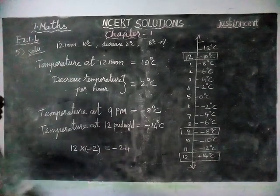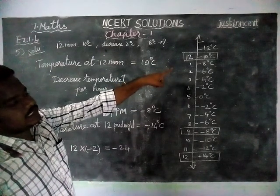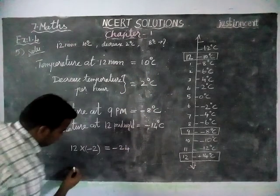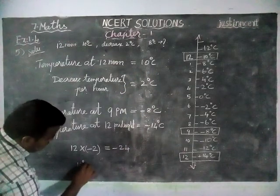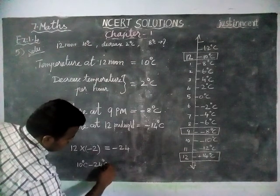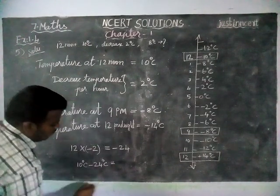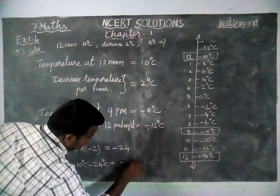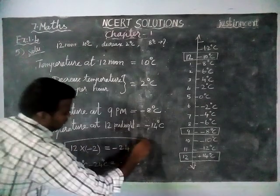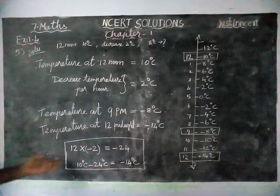Already at 12 o'clock the temperature is 10 degree Celsius, so we are going to add these two: 10 degree Celsius plus (minus 24 degree Celsius). The signs are different, so when we find the difference, minus 14 degree Celsius is the result. So we verified using integer addition and subtraction as well.